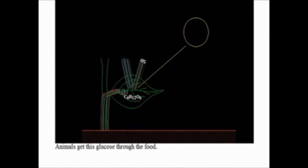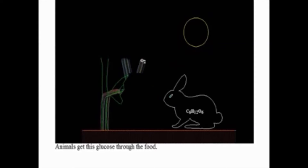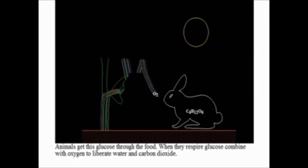Animals get this glucose through their food. When they respire, glucose combines with oxygen, releasing carbon dioxide and water. Respiration gives them energy.